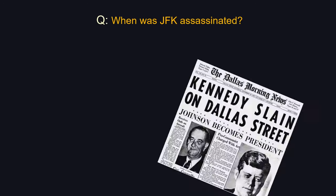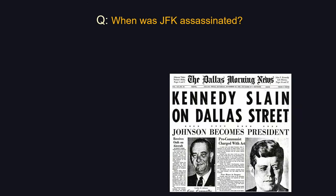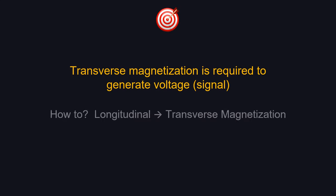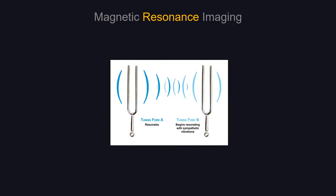Random question: When was JFK assassinated? 1963. Now we know we need to flip protons from longitudinal magnetization into transverse magnetization to get signal. How do we do that? This is where the second part — R for resonance — comes in. Resonance is a very effective way to transfer energy.